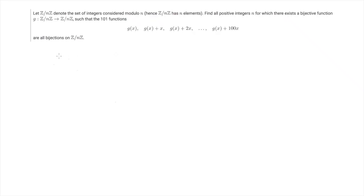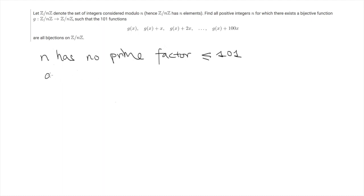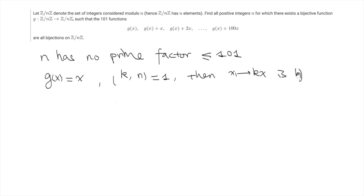Let me start by giving the answer. Such a bijection exists if and only if n has no prime factors smaller or equal to 101. If this is the case, we can simply take g(x) = x. We remark that if k and n are relatively prime, then the function x ↦ k·x is bijective from Z/nZ to itself.